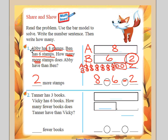Let's look right now at the last example. We'll read it together. Number 2. Tanner has 3 books. Vicki has 6 books. How many fewer books does Tanner have than Vicki?